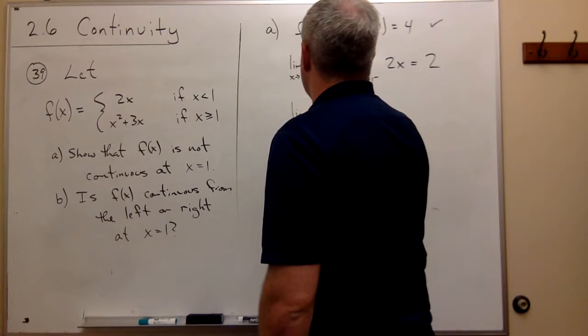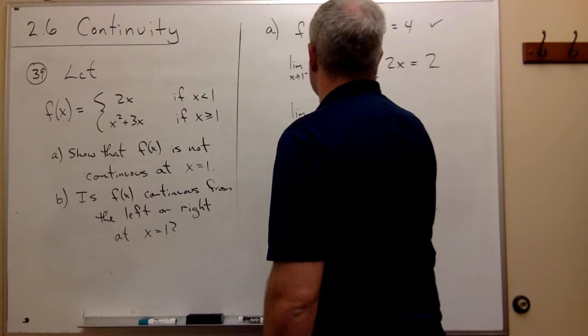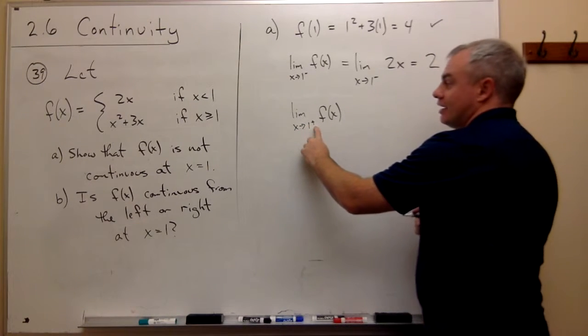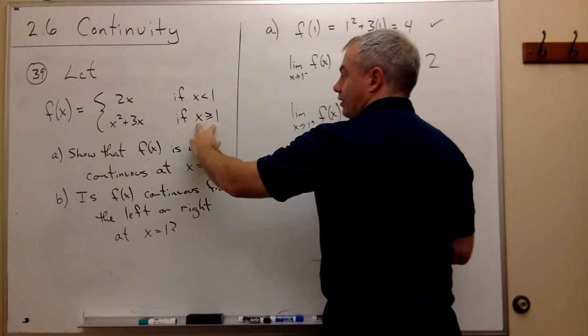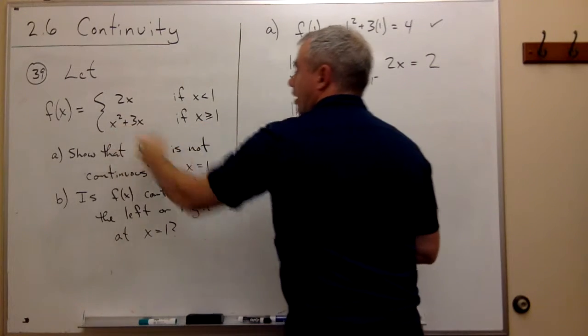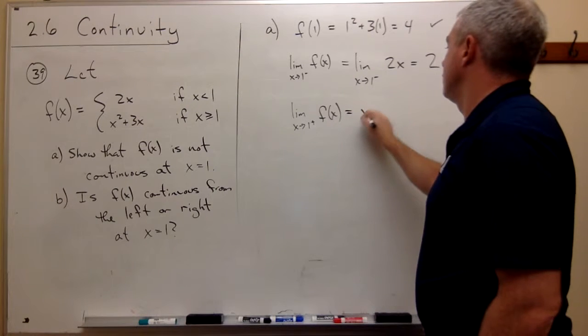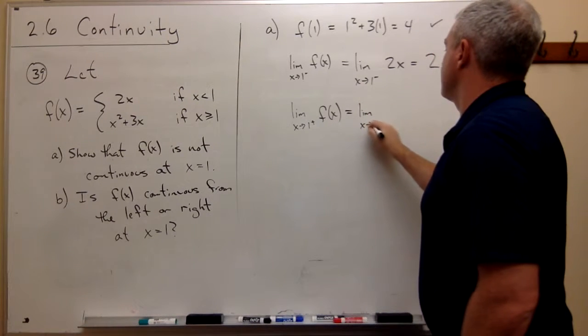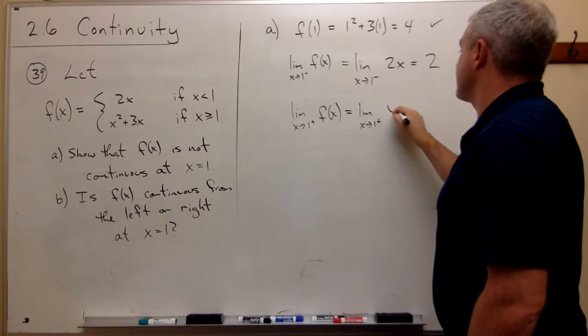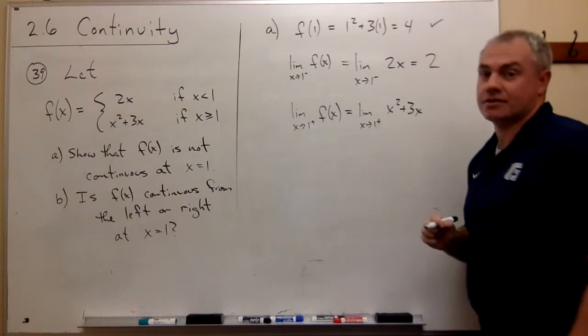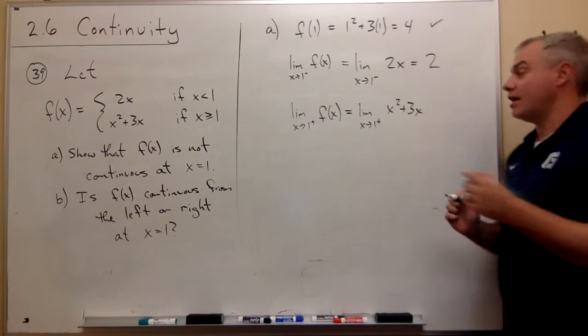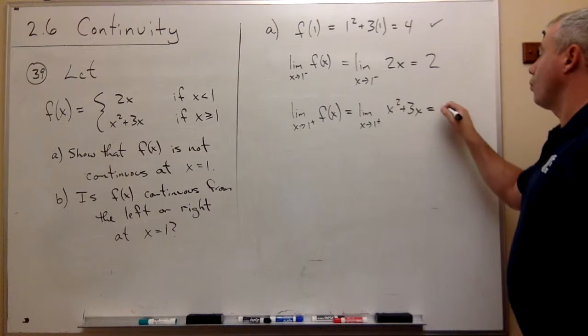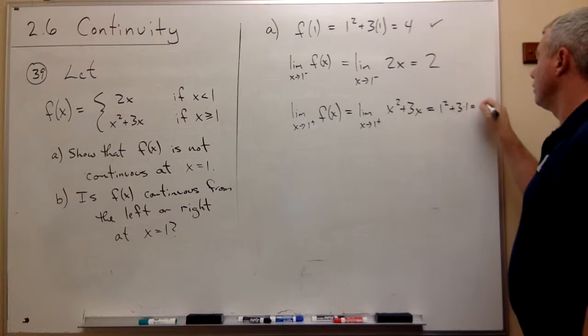Now we can look at the limit as x goes to 1 from the right of f(x). But if I'm coming at this thing from the right, then the x values are bigger than 1. If they're bigger than 1, then I use x squared plus 3x. So this is equal to the limit as x goes to 1 from the right of x squared plus 3x. Again, I don't create any division by 0 by plugging in 1 here, so I'll go ahead and do it, and I get 1 squared plus 3 times 1, which is 4.